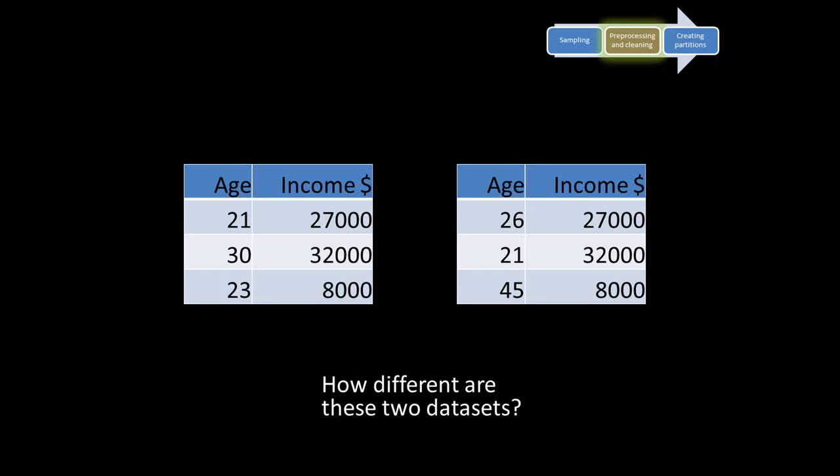Now we want to address another very important aspect of data mining and statistical analysis. Here we've got two very small datasets with age and income. In the first, age 21 has income $27,000; age 30 has $32,000; age 23 has $8,000. In the second, the incomes are the same but ages are different: 26 is $27,000; 21 is $32,000; and 45 is $8,000. These two data sets look very different — in the first, income seems to rise with age; in the second there's no such pattern.